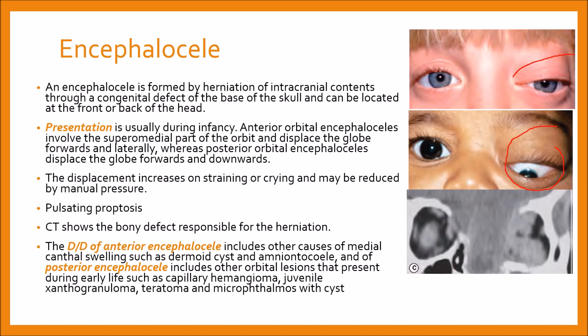Here on CT scan in the coronal section, a posterior encephalocele shows a large bony defect. The whole orbit is not properly formed due to the encephalocele and the bony defect is clearly visible.